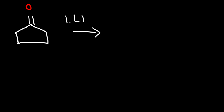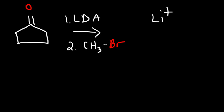Let's begin with this reaction. We have cyclopentanone, and in the first step we react it with LDA, and in the second step with methyl bromide. What's the major product? First we need to know what LDA is. LDA is lithium diisopropyl amide — a lithium with a positive charge and a nitrogen with two isopropyl groups and two lone pairs. This reagent is a strong base, and its purpose is to remove the alpha hydrogen.